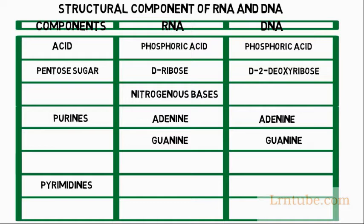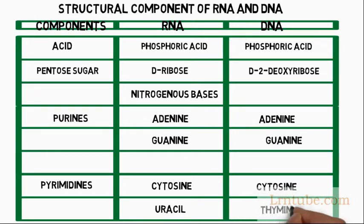Pyrimidines under RNA will yield cytosine and uracil, and under DNA will yield cytosine and thymine.